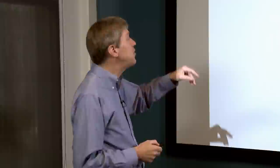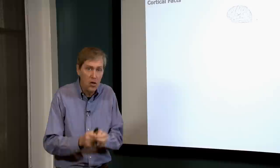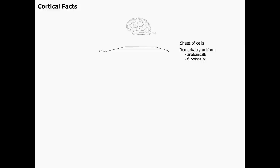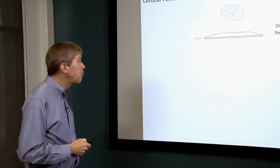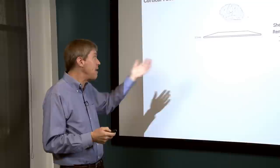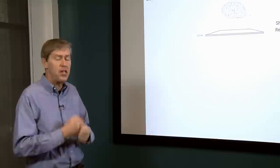Let's look at the cortex in more detail. A human neocortex next to a rat neocortex — every principle I'll discuss applies to all neocortices regardless of the animal. The only real difference between a rat and human neocortex is size. No matter what neocortex you're looking at, it's always a sheet of cells about two and a half millimeters thick. The difference between human and rat is just how large that sheet is. It's remarkably uniform — the detail in this sheet of cells is nearly the same across rat, mouse, monkey, dog, cat, and human.